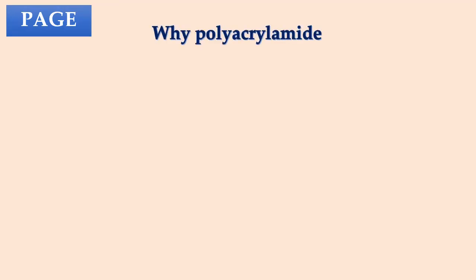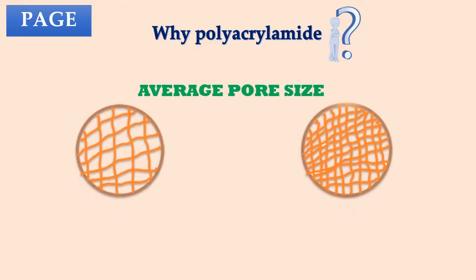So, why polyacrylamide gel instead of agarose gel? The answer to this question is hidden in the average pore size of gel matrix in each case. Agarose gel has larger pores, as compared to polyacrylamide gel, which has smaller pores. Polyacrylamide gel is suitable for the electrophoresis of smaller molecules, such as proteins.